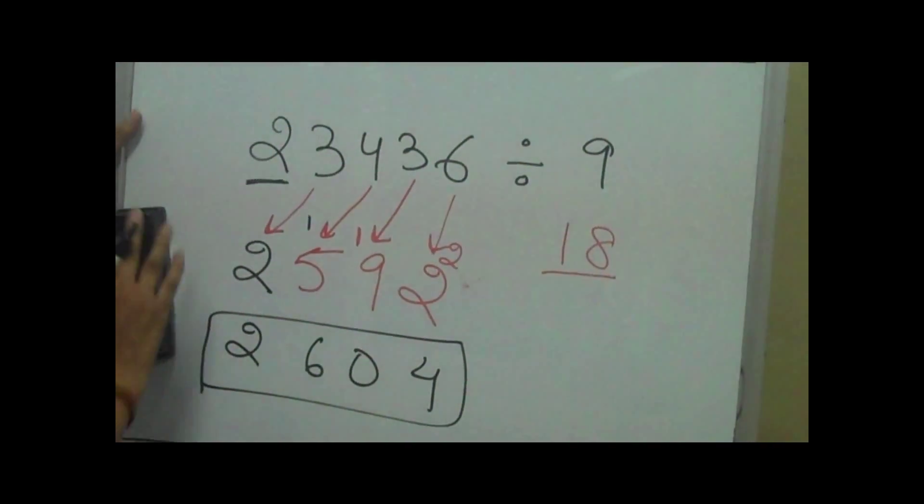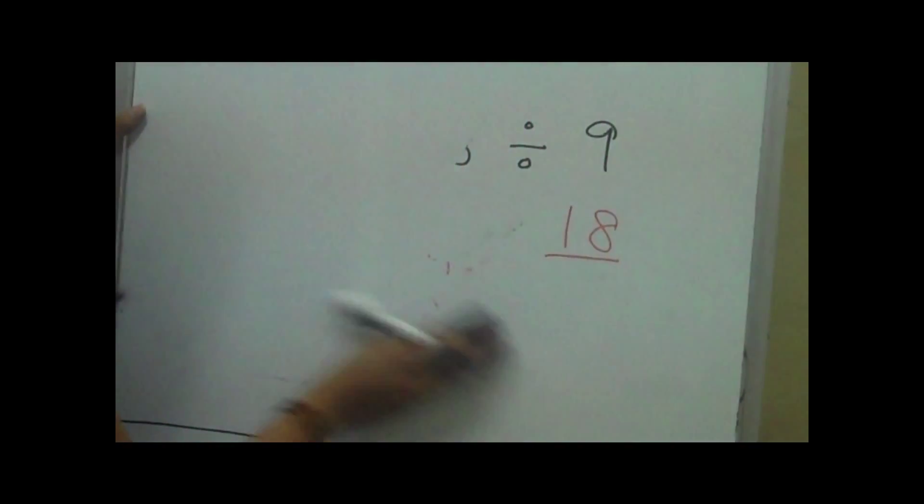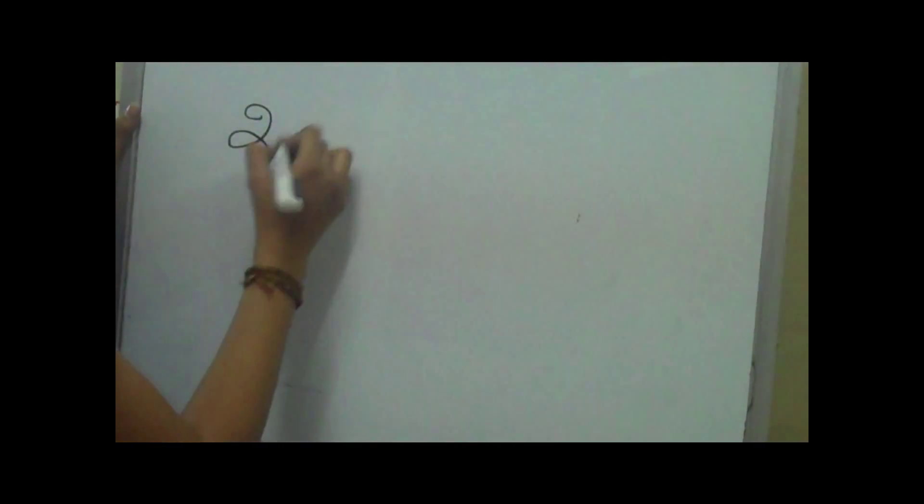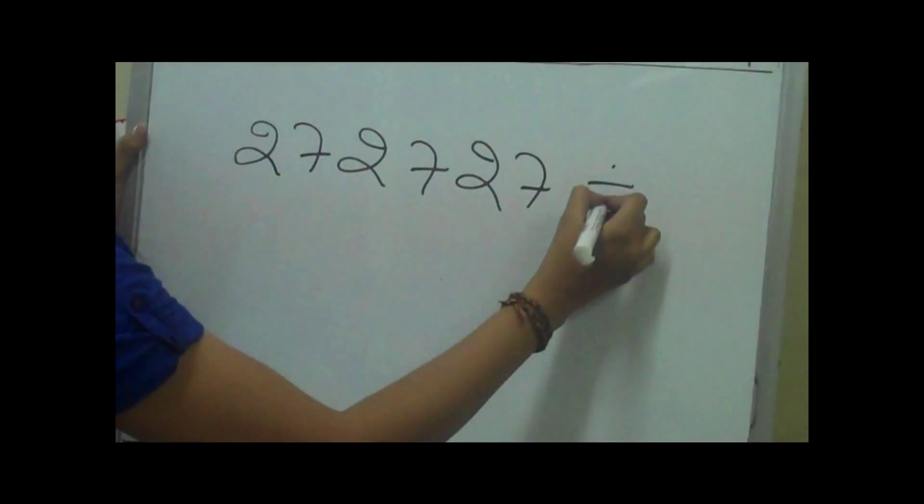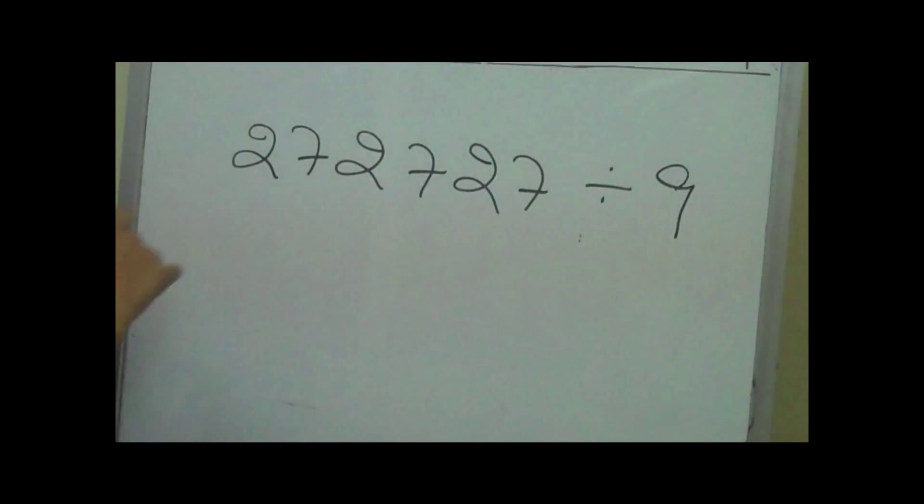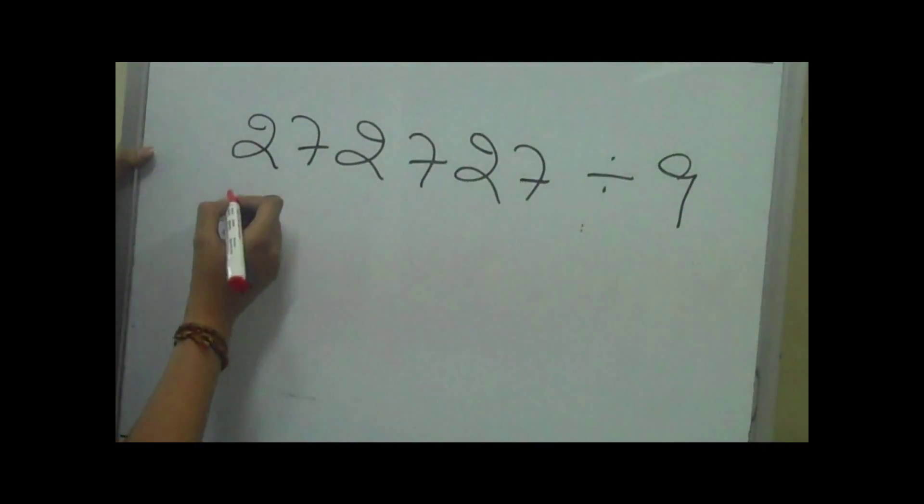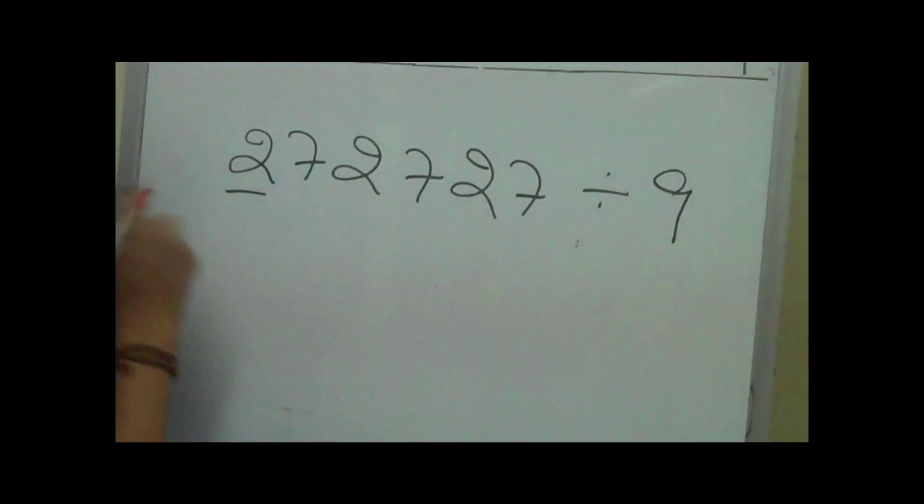Let's take another example and understand this concept. For example, if we have a number 272727 and we want to divide it by 9. See how we do it. First we copy the first number as it is.